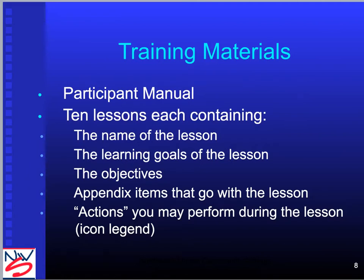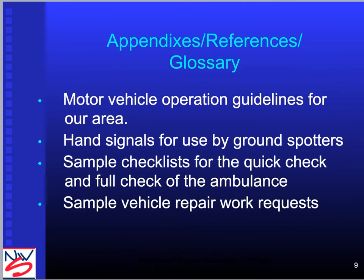In the participant manual, they have all the lessons and a little description of them and some of the things that are in it. We'll also be going over some of the protocols that Alabama has set up for ambulance operators. The manual also has the hand signals in it — usually about the only two we use are 'keep coming back' and 'stop.' There are also checklists if you want to inspect an ambulance, but every service has their own version of this, and you'll get familiar with that when you go to work.